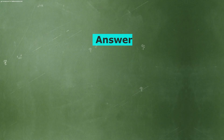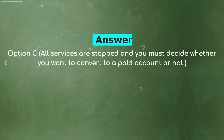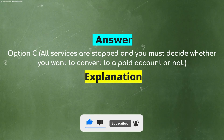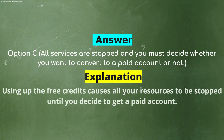And the correct answer is Option C, all services are stopped and you must decide whether you want to convert to a paid account or not. Using up the free credits causes all your resources to be stopped until you decide to get a paid account.